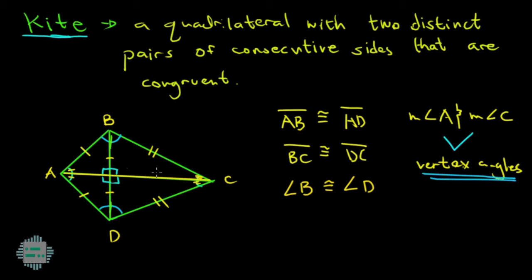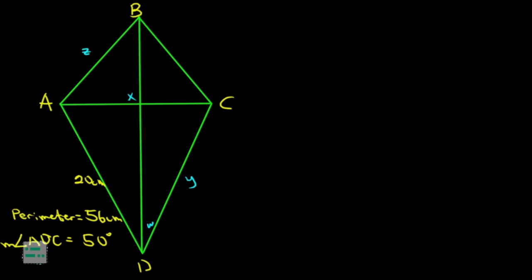Ngayong alam na natin yung properties ng kite, kaya na siguro natin mag-solve ng problems. Practice tayo. ABCD is a kite with side AD measuring 20 cm, perimeter is 56 cm, and angle ADC measures 50 degrees. Pinapahanap sa atin itong W this angle, X itong angle, Y length ng side na ito, then finally Z which is the length of side AB.